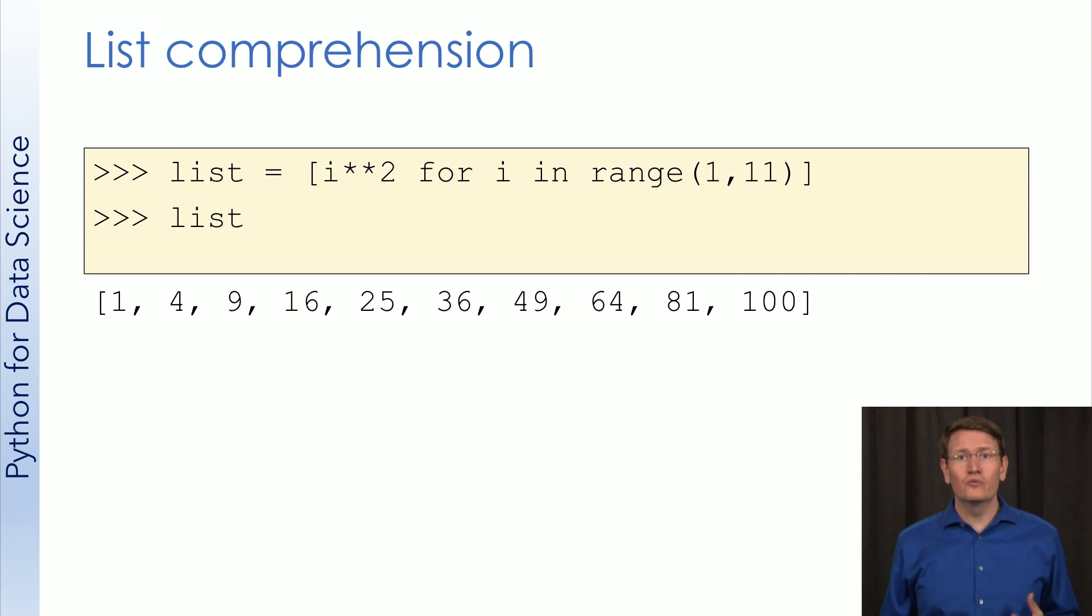This command here will build this list for us. Notice how short it is. But there are a number of pieces here. First, let's focus on the for i in range 1 through 11. This will provide i with the values 1 through 10, just like we're used to with for loops.